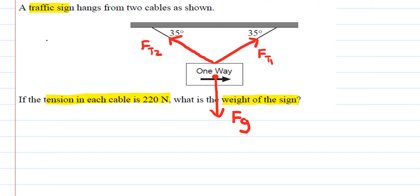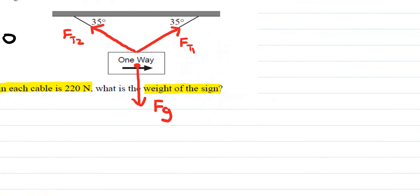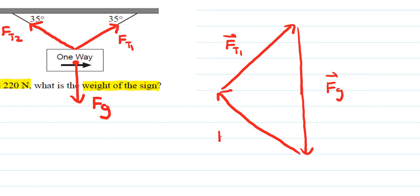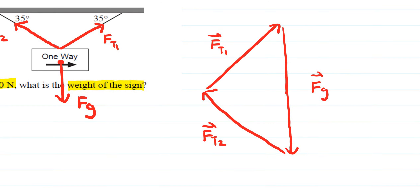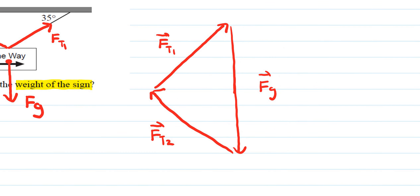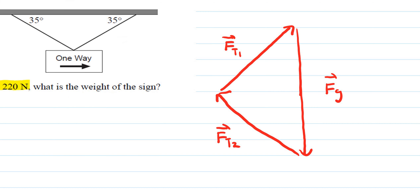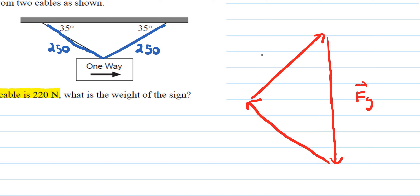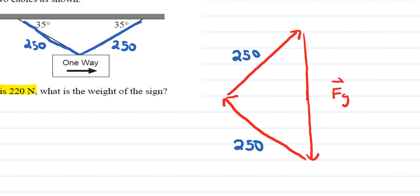After drawing the free body diagram, we construct a triangle using the concept that the sum of forces equals zero. Here is FT1, then the force of gravity acting downward, and then FT2 completing the triangle. The tension in each cable is 250 newtons, so both of those sides are 250. Since two sides of the triangle are equal, we have an isosceles triangle.